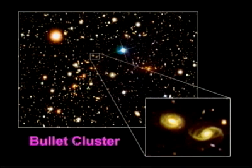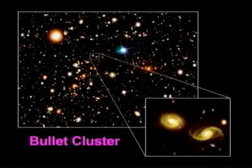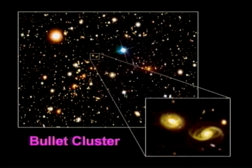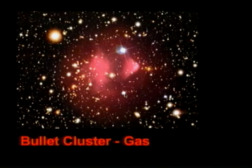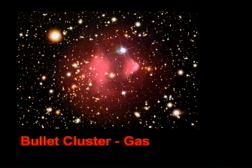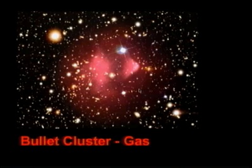This is a picture of the bullet cluster. Just to give you an idea of how big this thing is, we are zooming into a couple of galaxies there. Each one of those galaxies is the size of our own Milky Way. You see very few stars in the image — everything else is a galaxy. We can observe the gas in the cluster in X-ray, and we see this red distribution superimposed on the galaxies. There is a cone-shaped region of higher brightness — more gas, hotter gas — here and here.